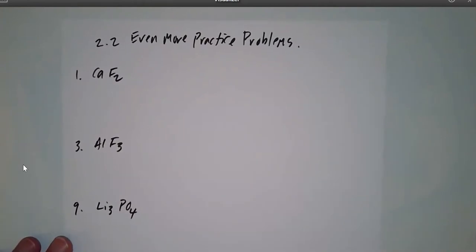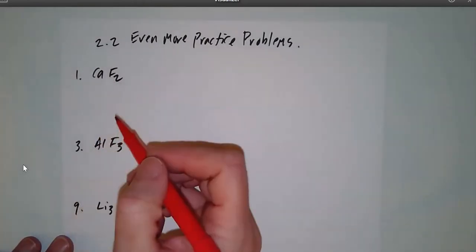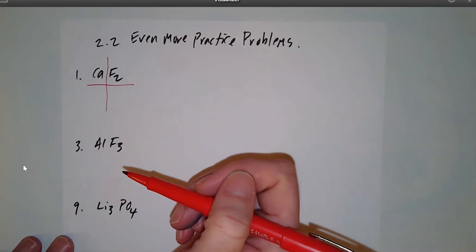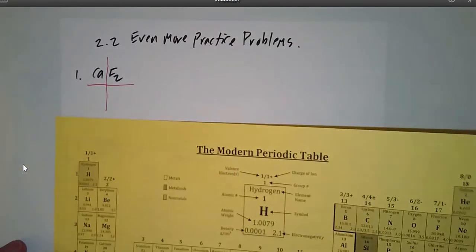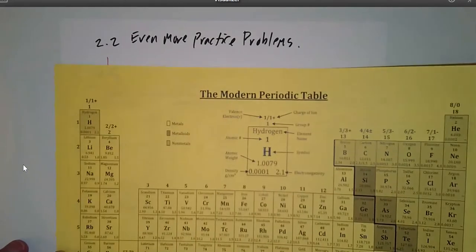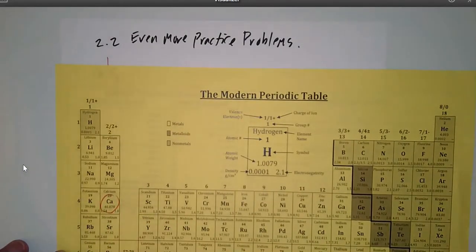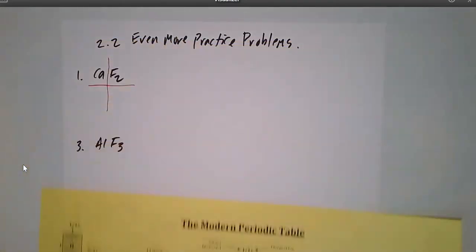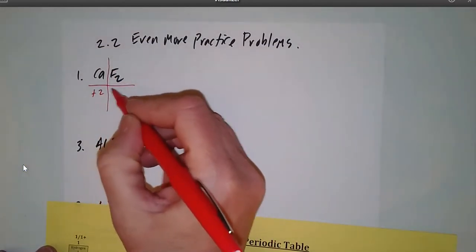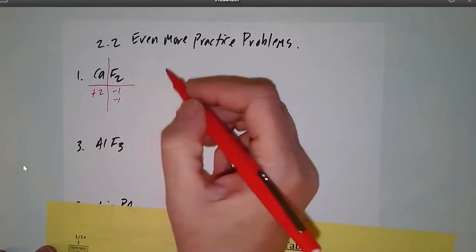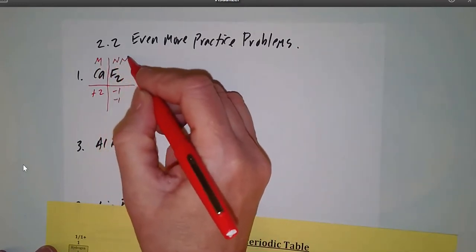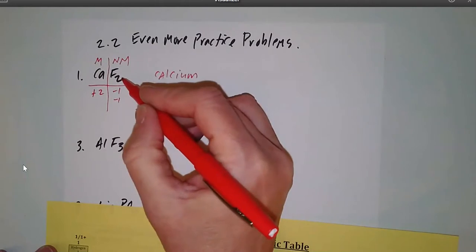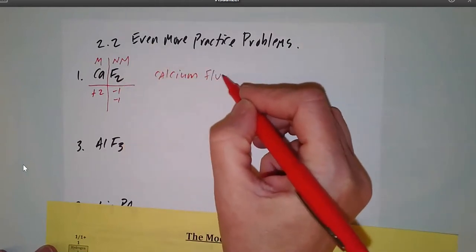The first one is CaF₂. Remember these are always binary — always two parts. Ca is calcium, that's the metal. F is fluorine, that's the non-metal. This is the simple kind. Calcium is plus two and fluorine is minus one. You say the name of the metal — calcium — and you change the ending of fluorine to fluoride. The name is calcium fluoride.